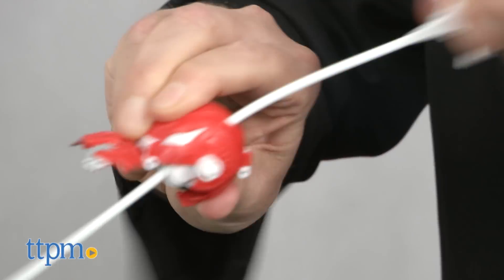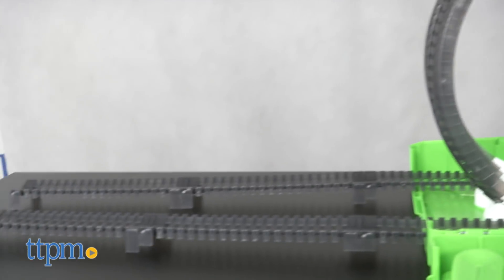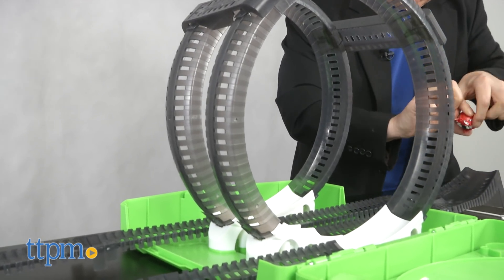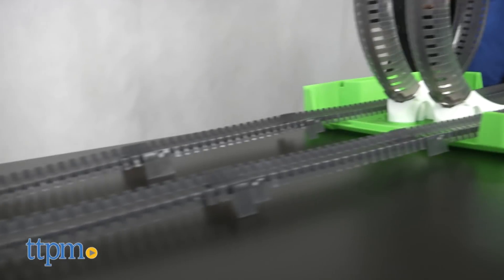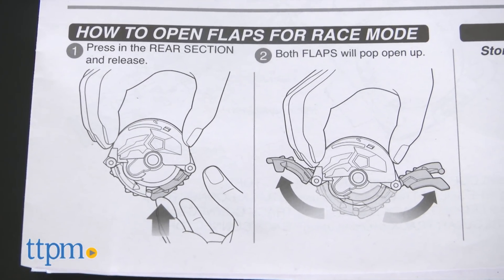We certainly like the design and the play pattern with these. It's fairly classic play with the innovation being that the Power Ripper is basically two toys in one. We did find converting from one form to the other fairly difficult and the instructions unfortunately aren't very clear.